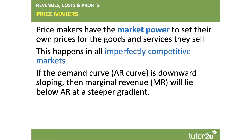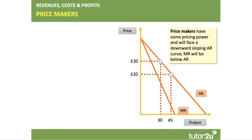A price maker has some degree of discretion or autonomy over the prices it charges. Indeed, often they'll charge different prices to different people for essentially the same product — we call that price discrimination. Crucially, for a price maker the demand curve is downward sloping, which means average revenue falls, and marginal revenue — the change in total revenue from selling the next unit — will be below average revenue.